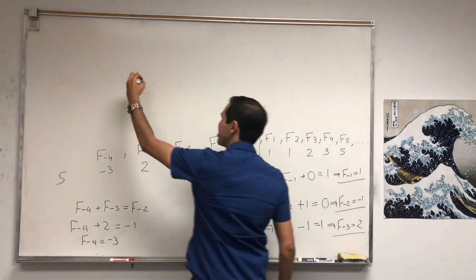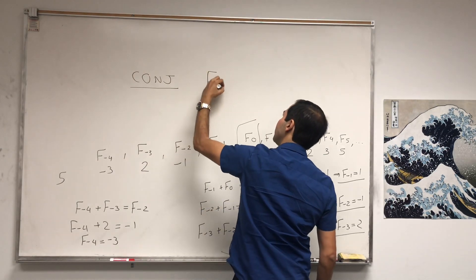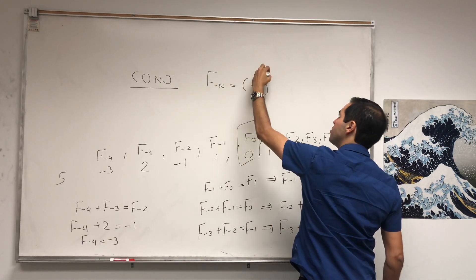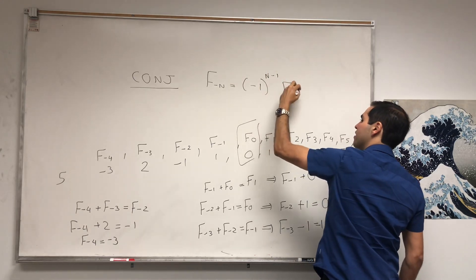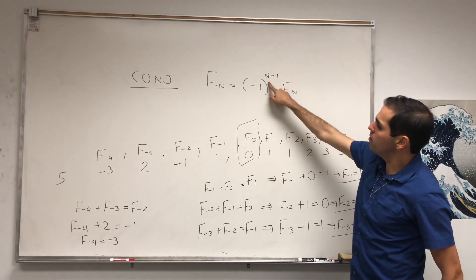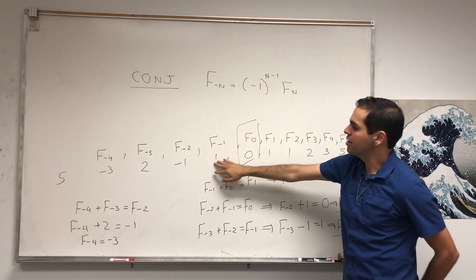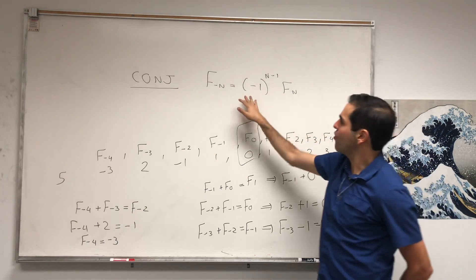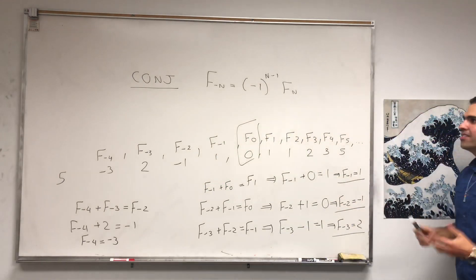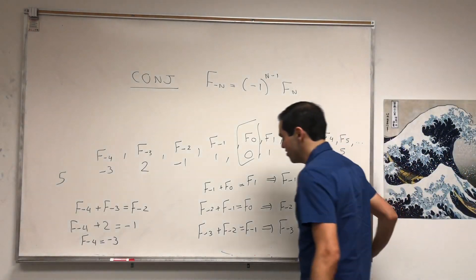So here's our conjecture: I'm claiming that F of negative n equals minus 1 to the n minus 1 times F of n. We need minus 1 to the n minus 1 because, for example, for n equals 1 you need a positive power, and for n equals 2 you need a negative power. And now let's prove this by induction.